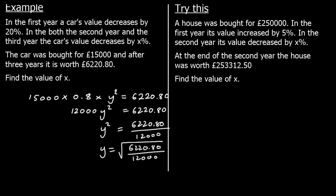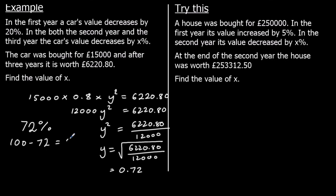So our multiplier is 0.72, which means every year we've got 72% of the year before. 100% take away 72% is 28%. So X is 28%.